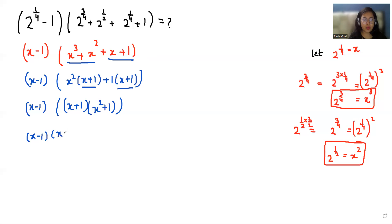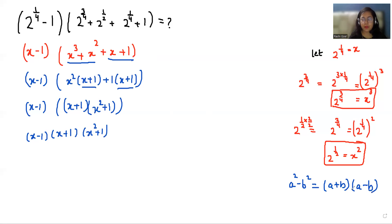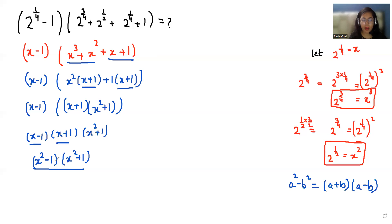Opening the bracket, we get (x + 1)(x squared + 1) multiplied by (x - 1). We can write this as (x squared - 1)(x squared + 1). Again, using the identity (a² - 1)(a² + 1) = a⁴ - 1, we can call this x to the power 4 minus 1.